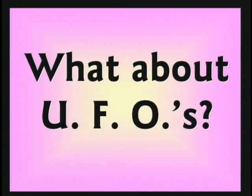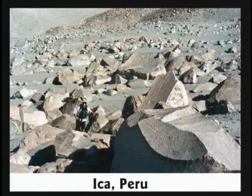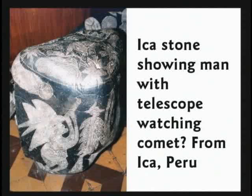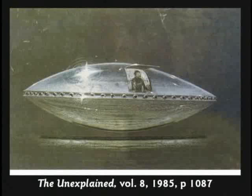What about UFOs? Again, I get blasted for this one. I don't know what the truth is about UFOs — they are unidentified flying objects. They're not identified yet; if they were, they would be IFOs, identified flying objects. Down in Ica, Peru, where the Ica stones are found, there's an Ica stone with an Indian of some kind looking through a telescope at something flying through the air — maybe a comet, maybe a UFO. There have been stories of strange things being seen for a long time, and many of them, I think, have natural explanations.